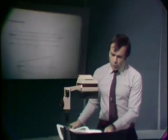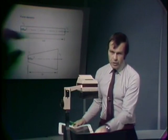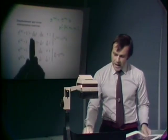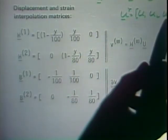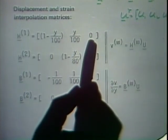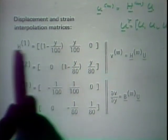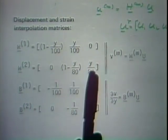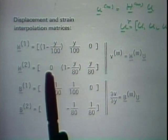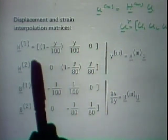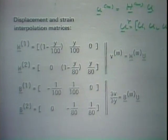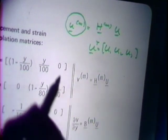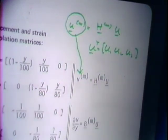We impose u1 = 0 by setting u1 equal to zero in the equilibrium equations. We then solve for u2 and u3. Having obtained u2 and u3, we know the displacements in each bar element and therefore the strains and stresses — the solution corresponding to the Ritz analysis solution two discussed in lecture two.